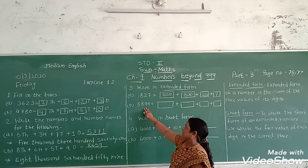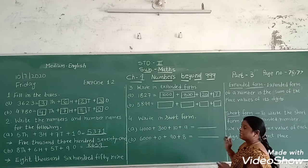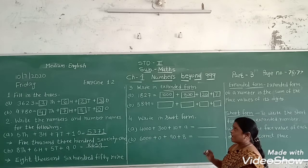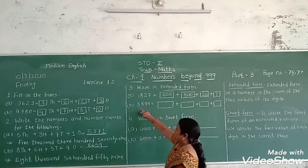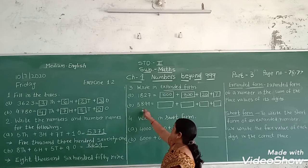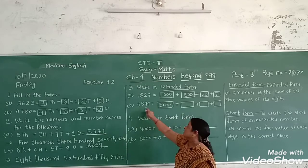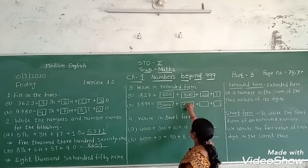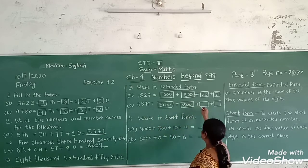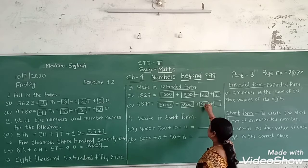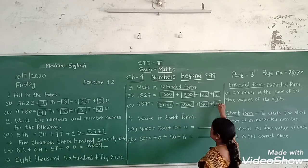Next: five thousand, eight hundred, ninety-nine. Five is in the thousands place. Eight is in the hundreds place, so we write eight hundred. Nine is in the tens place, so we write ninety. And the ones place is nine, so we write nine.